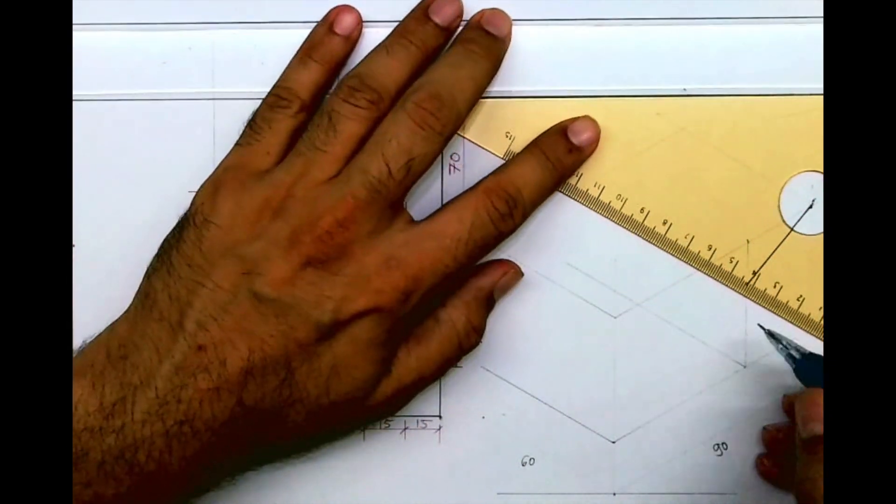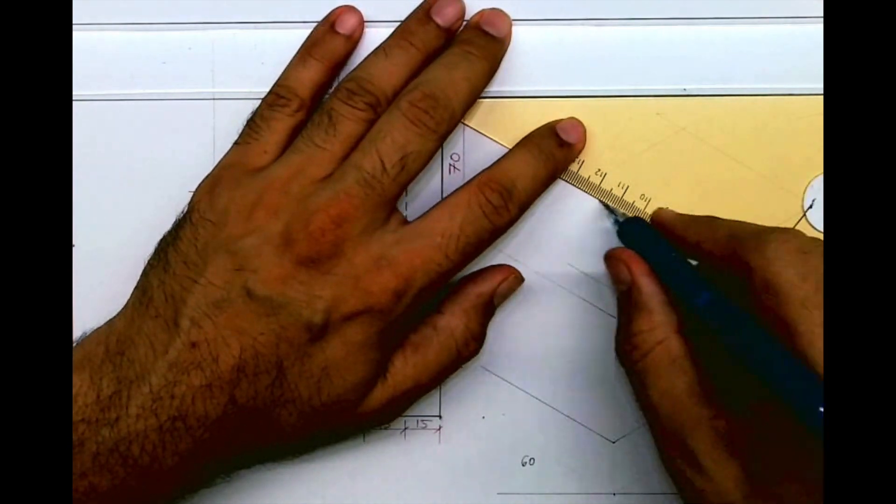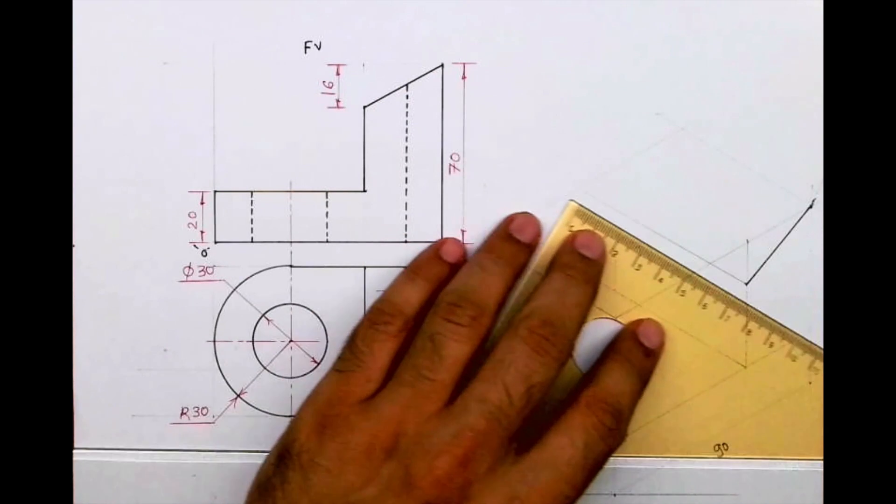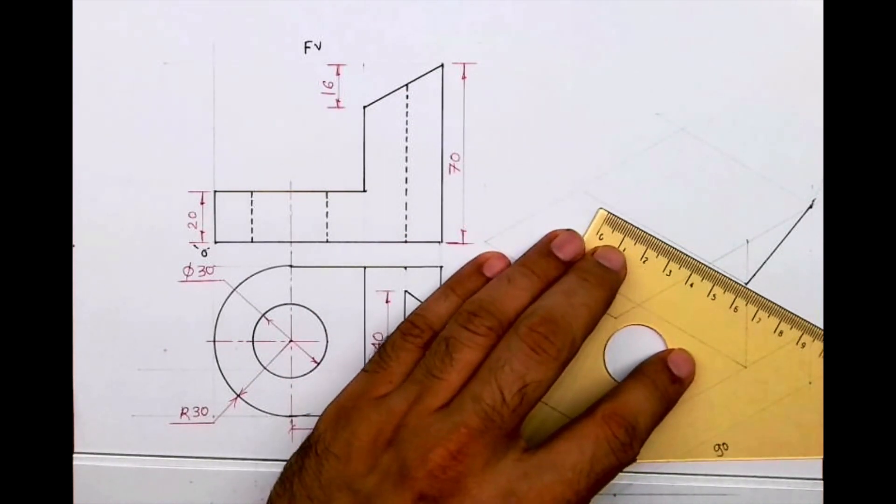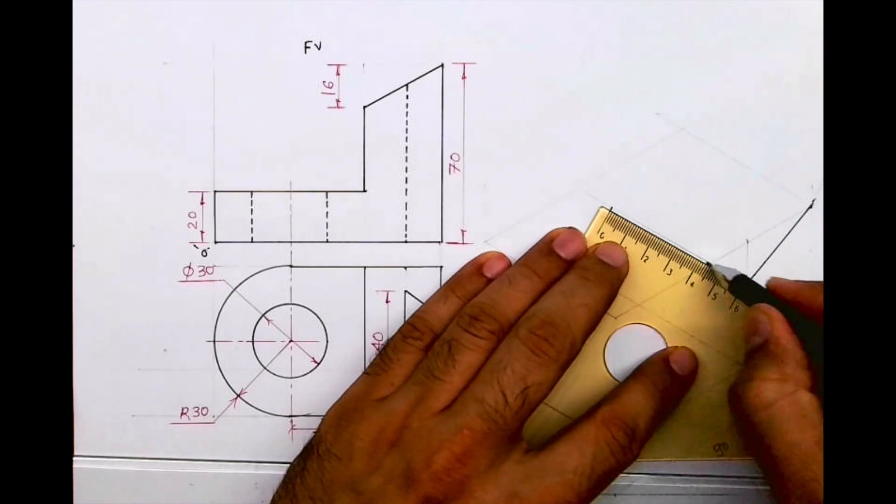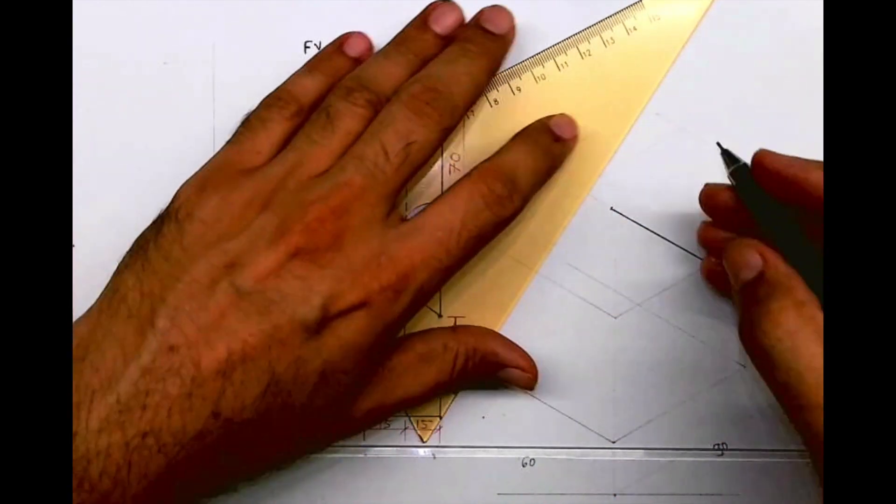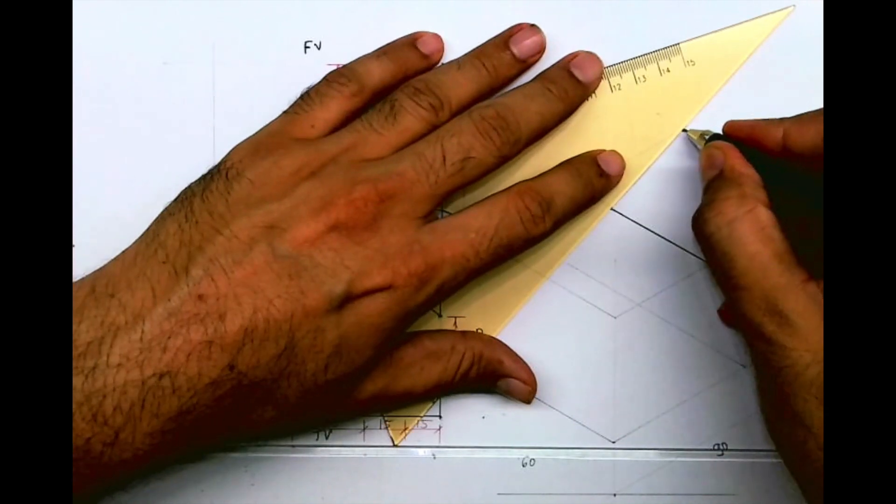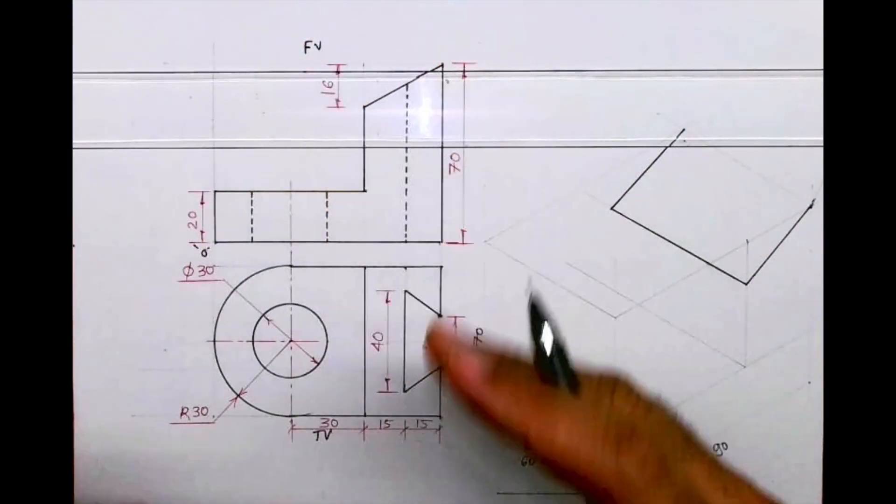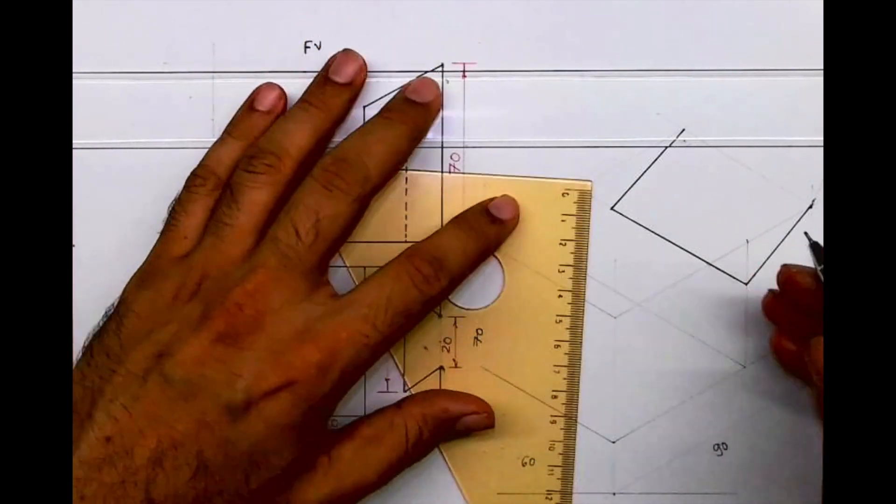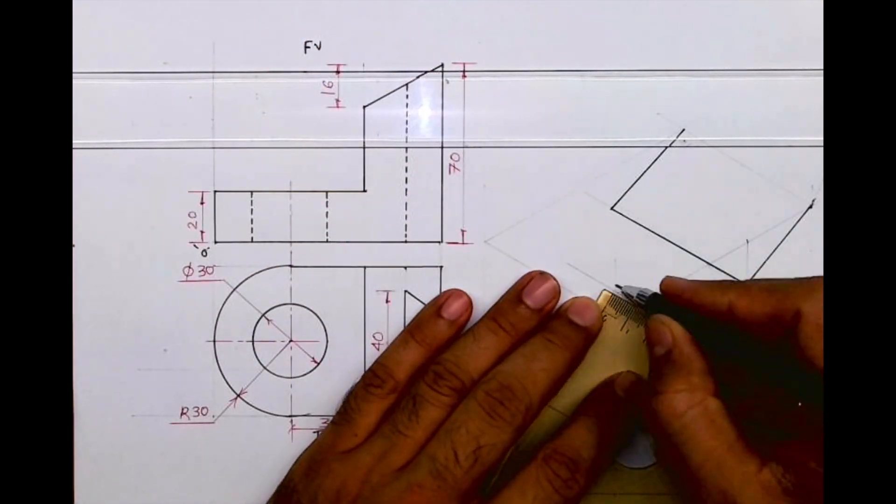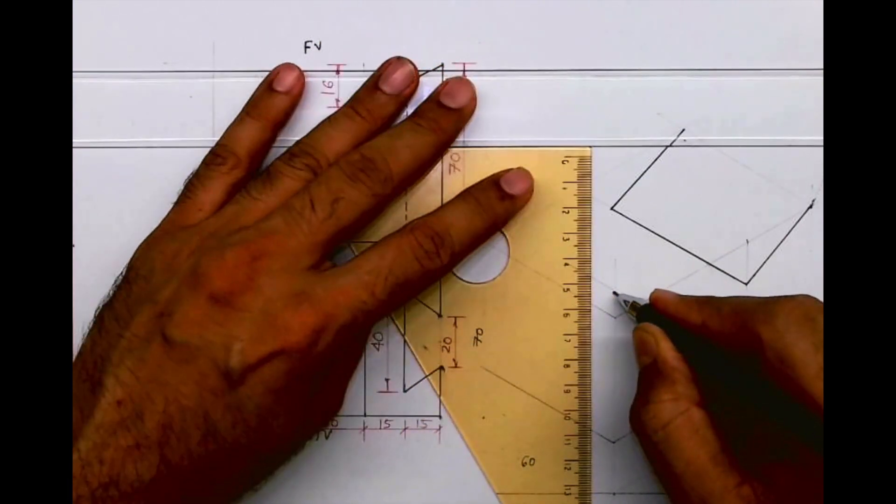This is also 60, this point also. So all the points we'll take behind by 60, 60, 60. And we'll join this slope. So whatever is there in the front, the same thing is behind. With that concept, I can draw directly straight line or I will take 60. Both will be same.